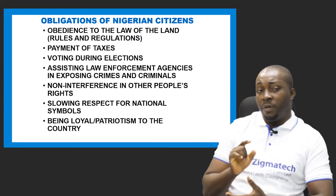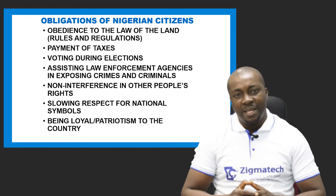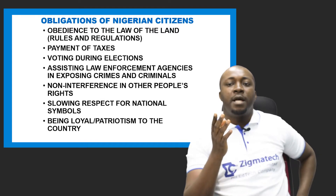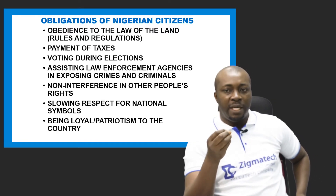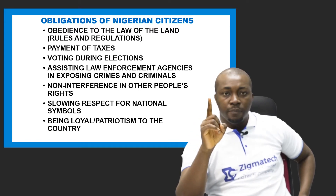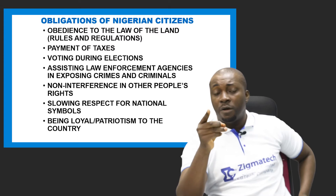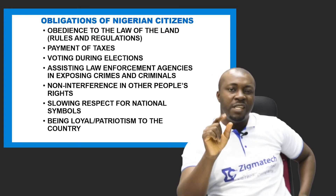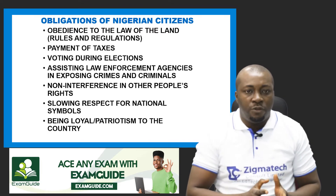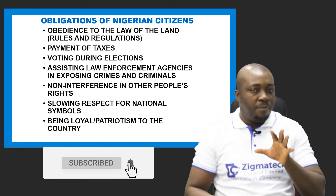Citizens are also obligated to vote during elections — to cast their votes and make their choice of candidate, which is part of the political obligations of citizens. Citizens are expected to assist law enforcement agencies in exposing crimes and criminals by providing needed information during investigations. Citizens should also not interfere with other people's rights — it is the responsibility of citizens to respect other people's rights and not violate them.